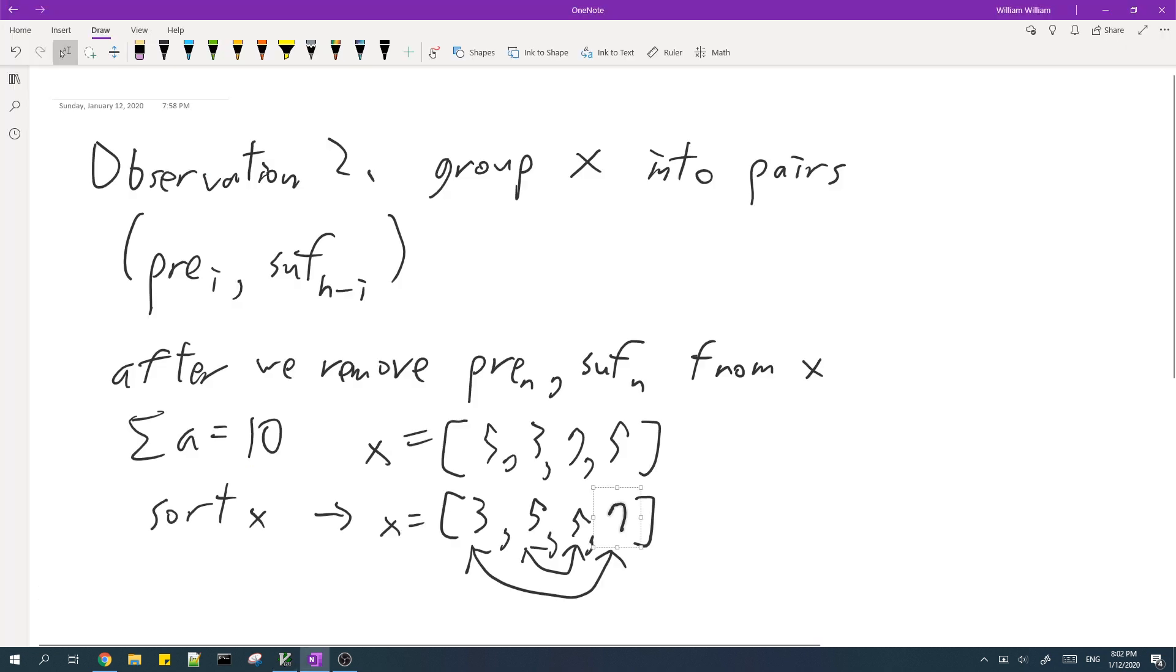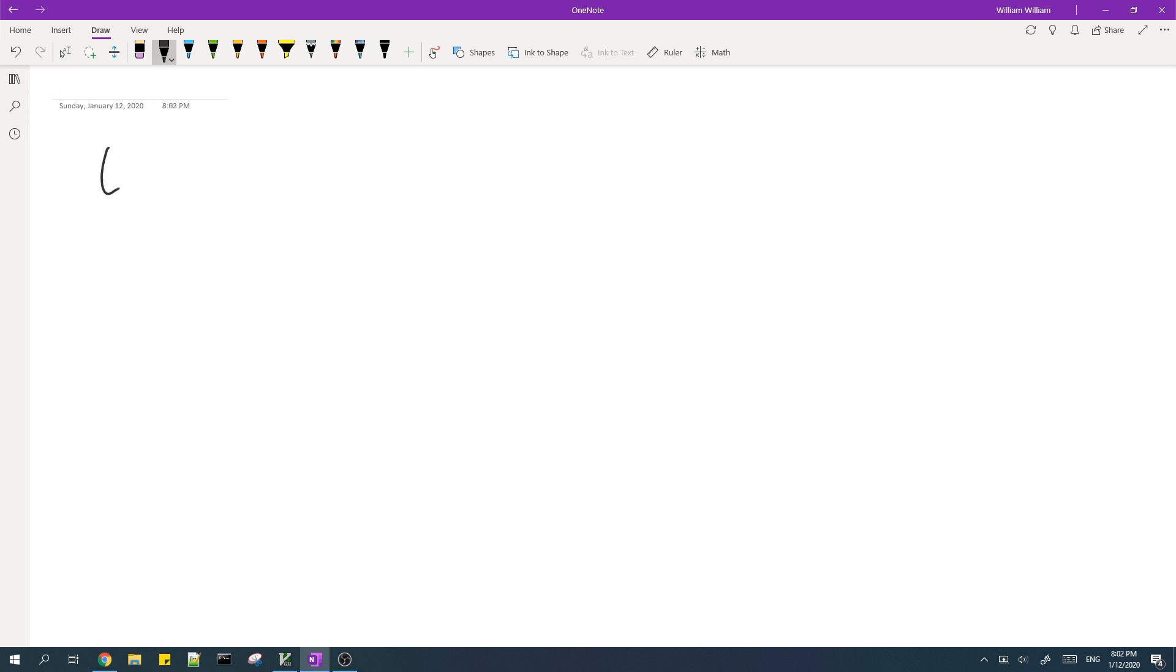Okay, so the third observation. So given the prefix sum array of n-1 elements, we can't uniquely determine the original array a.